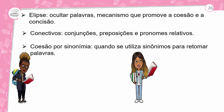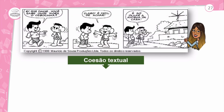Coesão por sinonímia: quando se utiliza sinônimos para retomar palavras já citadas. Temos aqui uma tirinha que diz: 'Ei, por favor, sabe onde mora o Cibolinha?' 'Claro, é fácil de achar. É só olhar a antena da casa.' Meus amadinhos, caso você não tivesse o conhecimento da história em quadrinhos de Maurício de Sousa, não conhecesse o personagem, você saberia identificar o Cibolinha? Claro que não. Então, aqui há uma necessidade do conhecimento prévio. Por que ele aponta para a antena? Porque faz o desenho do cabelo do Cibolinha.